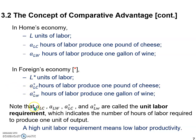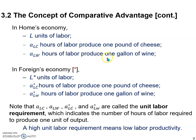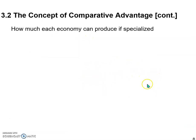This might be a little confusing: the higher the value of these variables, the lower the labor productivity, because they require a higher number of hours to produce one unit of cheese or wine. Now, if we use total units of labor L divided by ALC, we can find the maximum amount of cheese home can produce. And L divided by ALW gives the maximum amount of wine home can produce. Similarly, we can get the same thing for the foreign economy — L-star divided by A-star-LC and L-star divided by A-star-LW. I've already put this in a table.